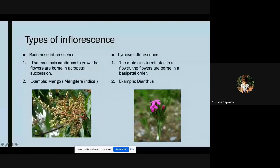While the older flowers are at the base. An example is mango, whose scientific name is Mangifera indica. As you can see here, the new flowers are at the apex whereas the older flowers are at the base.